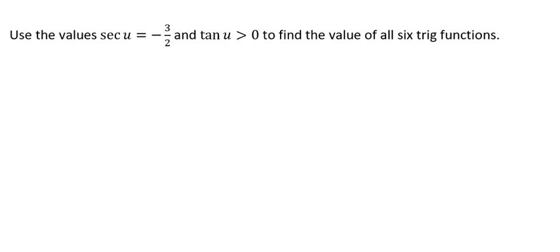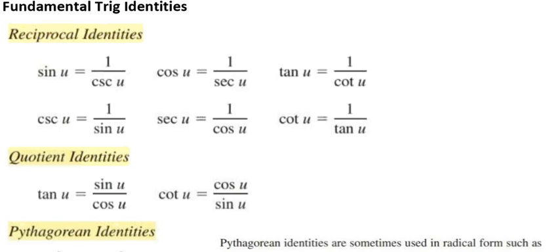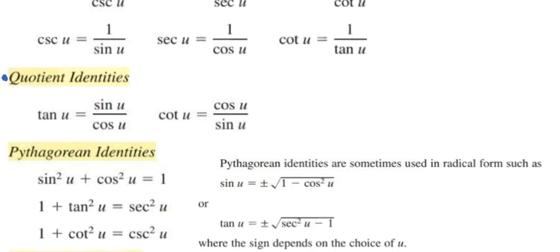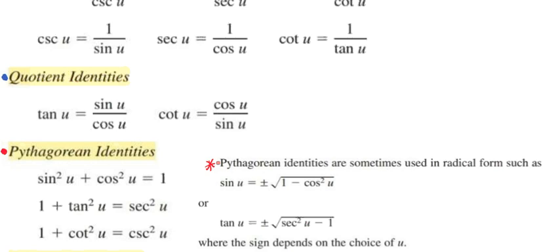Let's review quickly what our trig identities are. Here are our fundamental trig identities: we have our reciprocal identities, our quotient identities, and our Pythagorean identities. Note that sometimes the Pythagorean identities can be used in radical form, such as sine of u equals plus or minus the square root of 1 minus cosine squared of u, or tangent of u equals plus or minus the square root of secant squared of u minus 1.